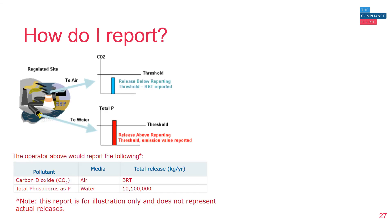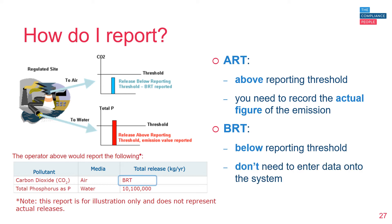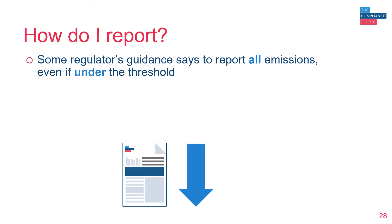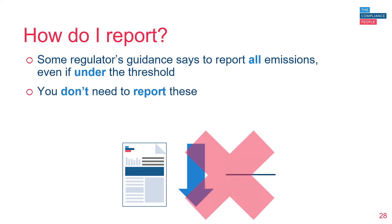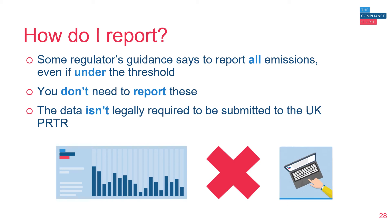The example shown illustrates more about the thresholds and how you need to report. If the figure is ART — above reporting threshold — then you'll need to record the actual figure of that emission. However, if it's BRT — below the reporting threshold — you do not need to enter the data onto the system. This can be a little confusing, as some guidance associated with regulators' online reporting systems does say to report all emissions even if under the threshold. However, we've checked this with local authorities and you do not need to report figures if under the thresholds, as these are below threshold values and the data is not legally required to be submitted to the UK PRTR.